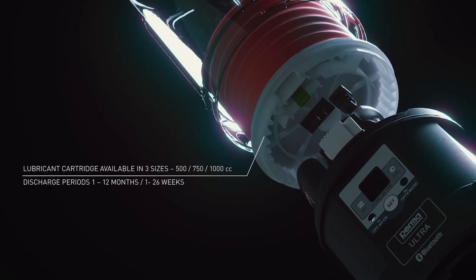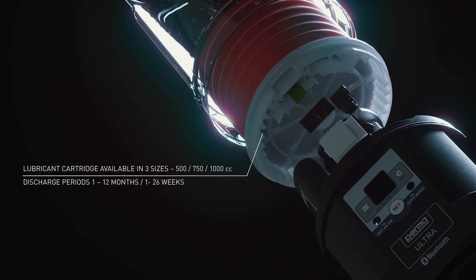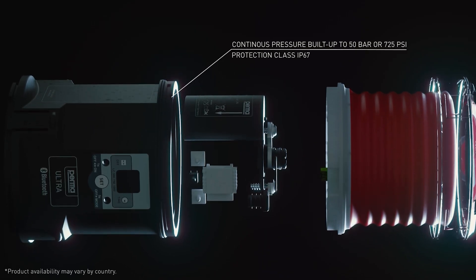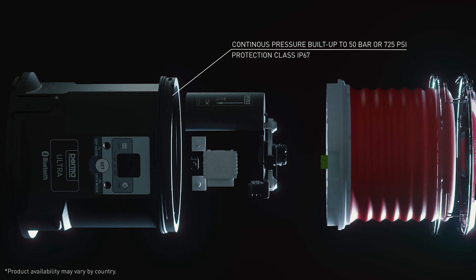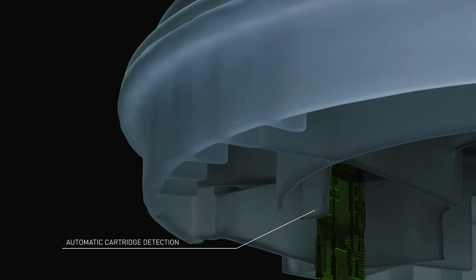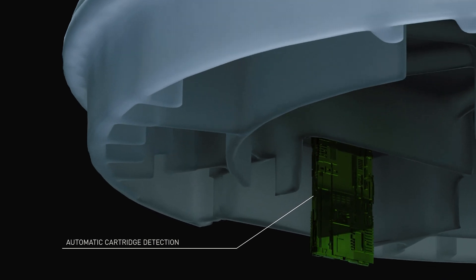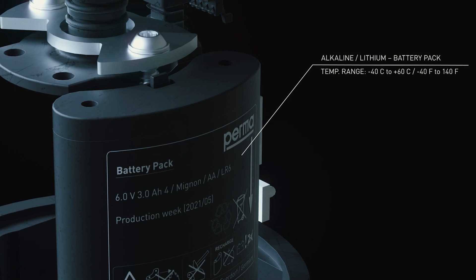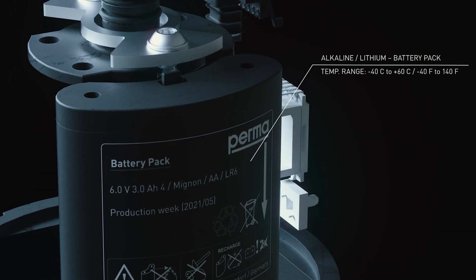With three cartridge sizes, pressure build up to 50 bar or 725 psi, and options of weekly and monthly time settings, perma-ultra is an extremely versatile and capable lubrication system suited to a wide range of applications.